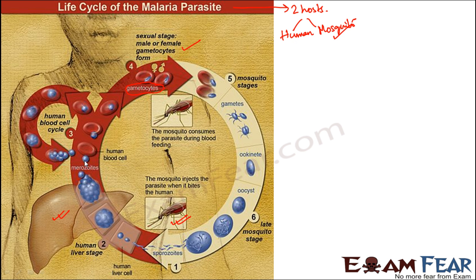When the red blood cells rupture, a particular toxic substance called hemozoin is released. Hemozoin is responsible for causing fever and chills — that is, fever with shivering. You would have seen that in a patient suffering from malaria, fever is always accompanied by heavy chills. All the symptoms generally seen in malaria are caused by this hemozoin.